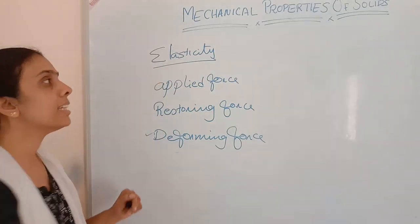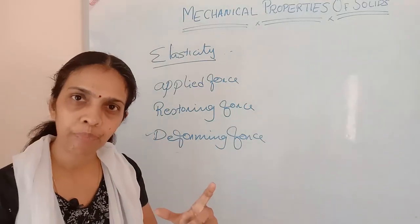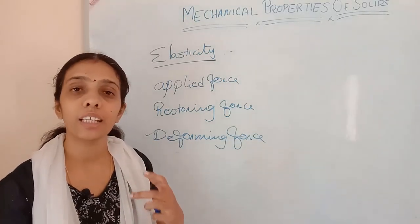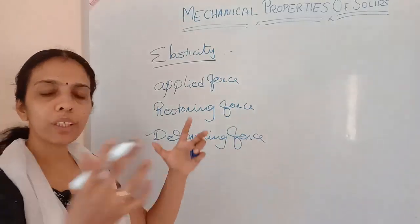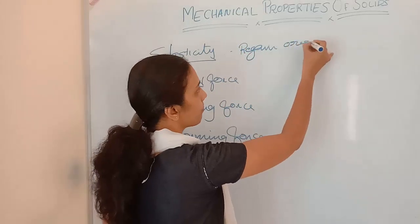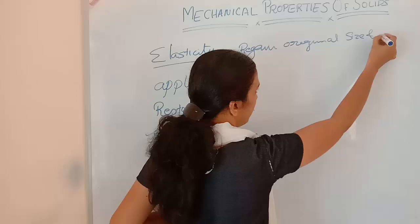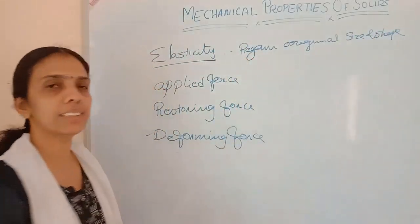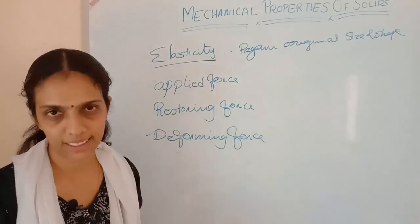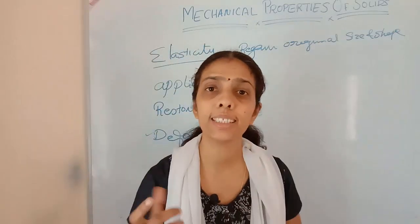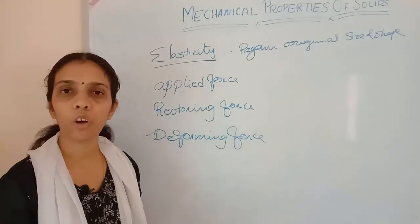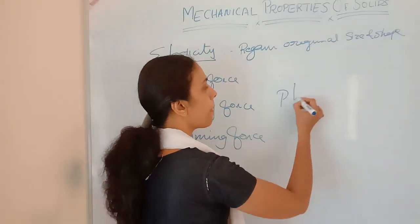So what is meant by elasticity? Elasticity is the property of a body by virtue of which it regains its original shape and size after the removal of the applied force. If we are removing the applied force, the object will be regaining its original shape and size. That is called elasticity. If it is not regaining its original size and shape after the removal of the applied force, then we call it plasticity.